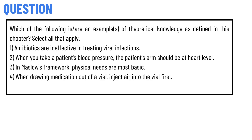Our today's question is: which of the following is an example of theoretical knowledge as defined in this chapter? Select all that apply. Option one: antibiotics are effective in treating viral infections. Option two: when you take a patient's blood pressure, the patient's arm should be at heart level.